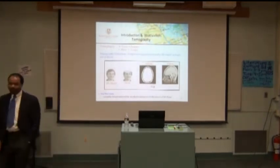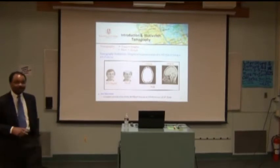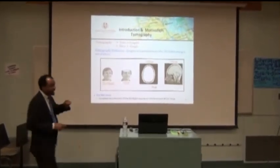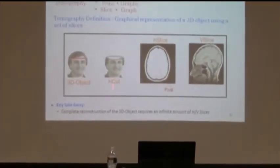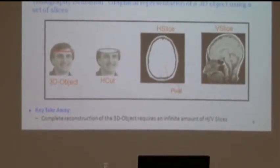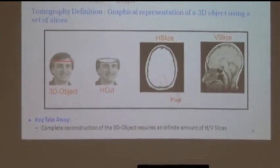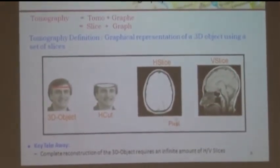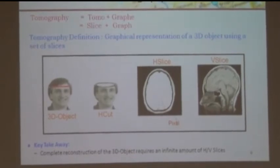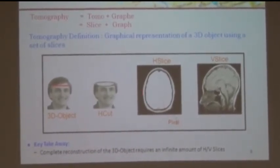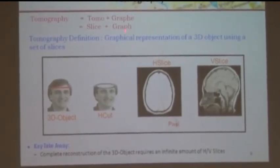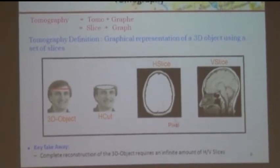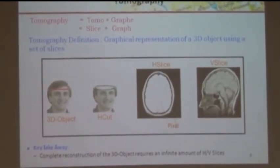Tomography — first thing I want to talk to you about. Here's a picture of a guy with his head cut off; doesn't look very comfortable. What that is illustrating is a cut — an edge cut through his head. You can think of taking several of these, and if you were able to put them back together, taking horizontal or vertical cuts, you could come up with pictures like this. Taking these cuts and then going back and reconstructing them to show what the inside of the head looks like — that's tomography. It's a slice representation, plus graph. You put all the slices together and you end up with a 3D picture that reconstructs an object.